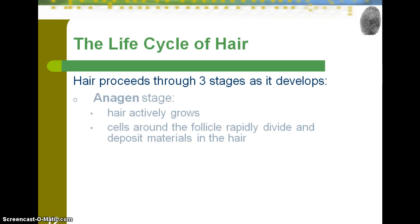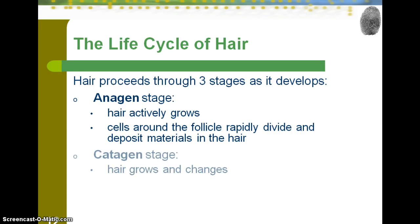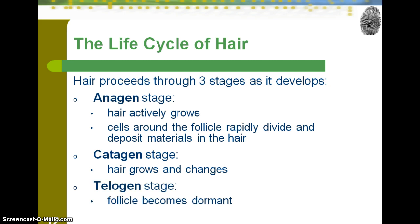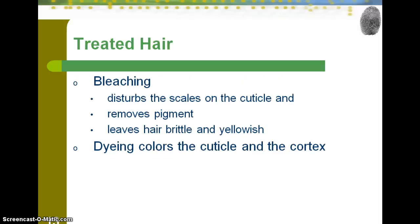The cycle of hair goes through three stages. The first is the anagen stage, which is the active growth stage. The second is the catagen stage, where hair is growing and changing. The third is the telogen stage, where the follicle becomes dormant and the hair begins the process of being released from the follicle. There are also signatures of treatments: bleaching can disrupt the scale pattern on the cuticle, removing the pigment, as well as dyes.